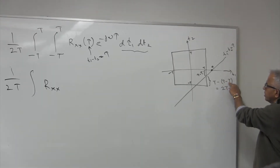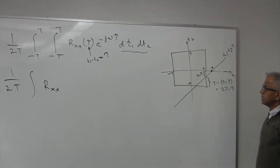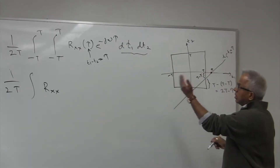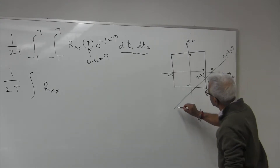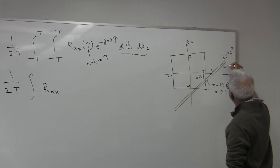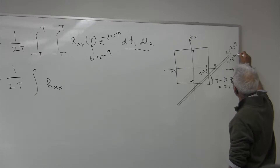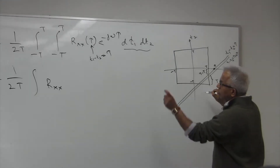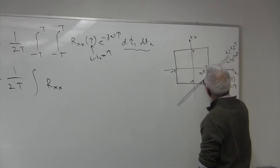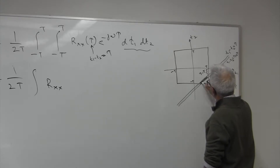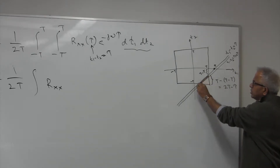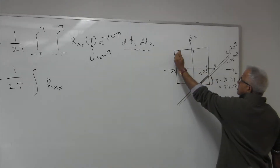So t minus (tau minus T) gives 2T minus tau. Now I'm going to make a change from dt1 dt2 to integrate over tau. If you change t1 or t2, tau is going to change. So I'm going to make a small change delta tau. The line t1 minus t2 = tau shifts to t1 minus t2 = tau + delta tau. I need to integrate over this square region. If I integrate on tau, I'm integrating over the strip between the two lines where t1 minus t2 is constant within delta tau. I need to find this marked area delta A, then I can just shift tau.